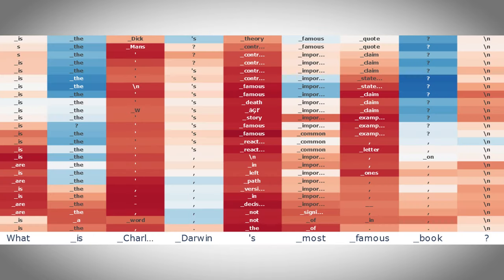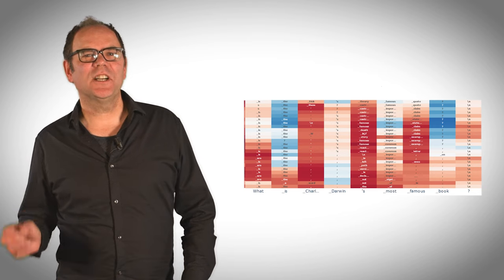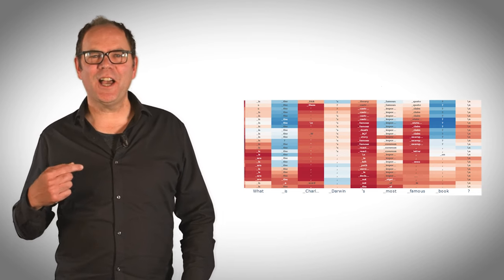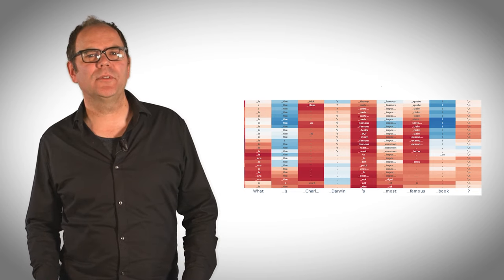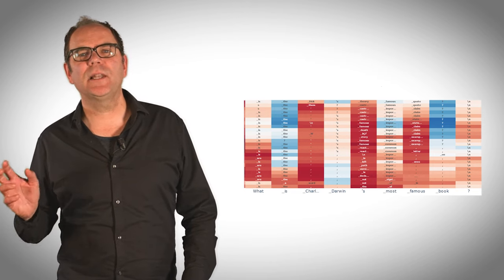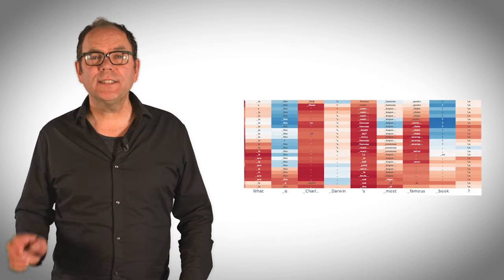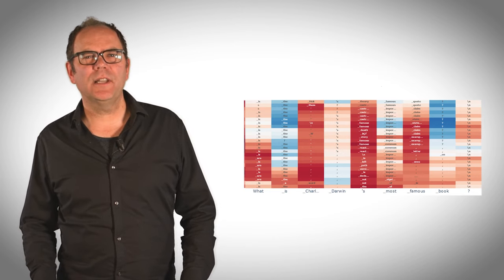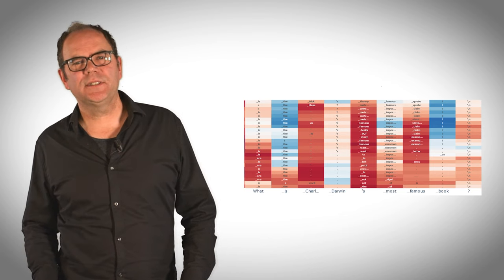All the other columns are worth a look too. They are crucial for the proper functioning of the large language model, as we will see later. But their predictions are not really used, because I as a user have already typed in the entire question in my prompt, as well as the start of the answer 'Darwin wrote.' So let's have a look at what happens when the large language model is asked to take over and answer my question.